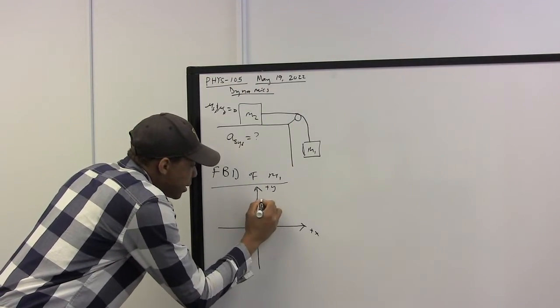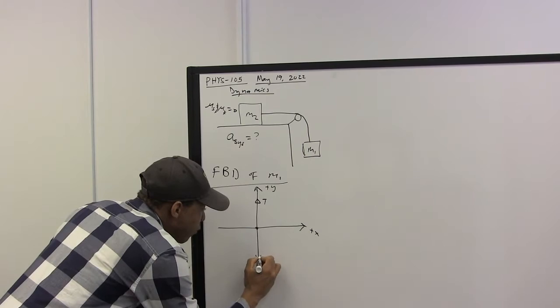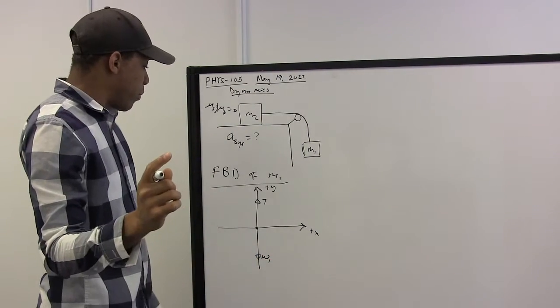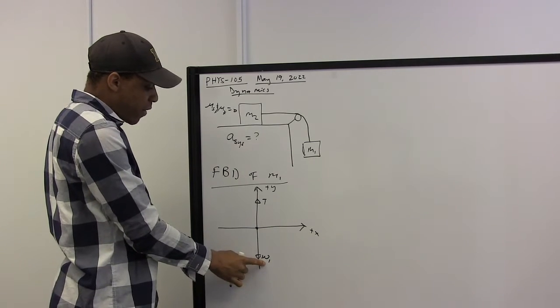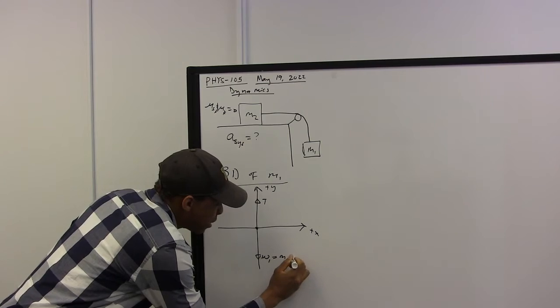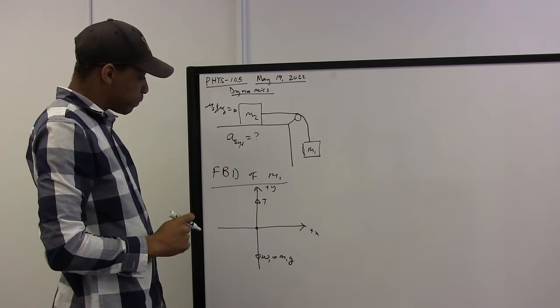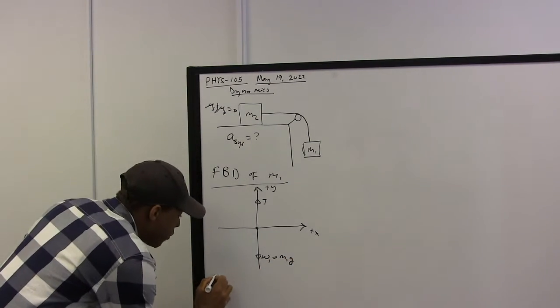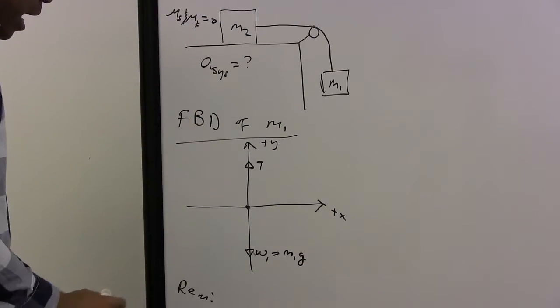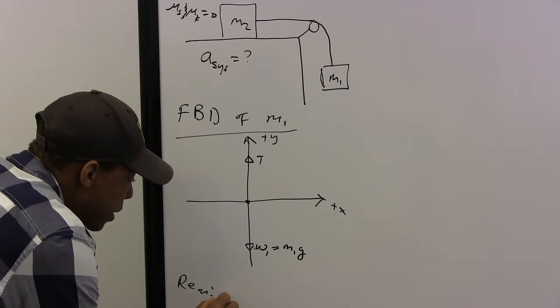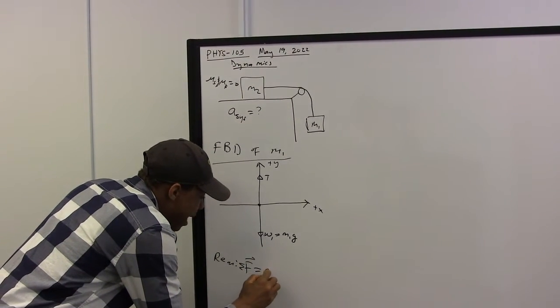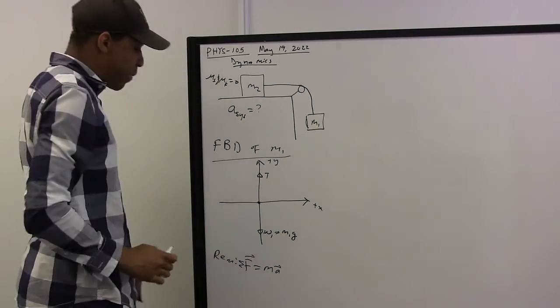The forces acting on mass 1 are the tension T and the weight of mass 1, which is W1. Remember from previous chapters, we said that the weight of an object on Earth close to the surface is given as the mass of that object times the gravitational acceleration. I would like for us to review Newton's second law before we proceed. In past, Newton's second law states that the effective sum of all forces acting on a body is equal to the mass of that body times the acceleration of that body.